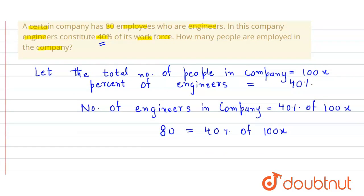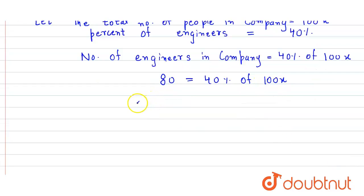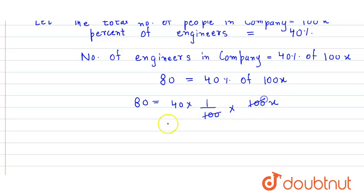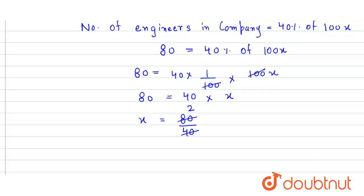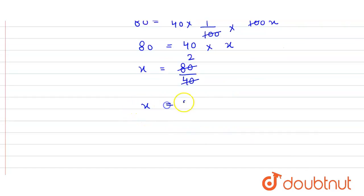Now we simply solve it to find the value of x. So 80 is equal to 40 into 1 upon 100 of 100x. The hundreds cancel, and we get 80 is equal to 40x. So x is equal to 80 divided by 40, which gives us x is equal to 2.